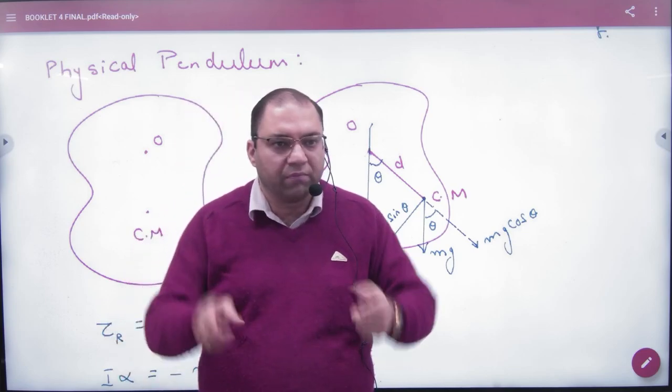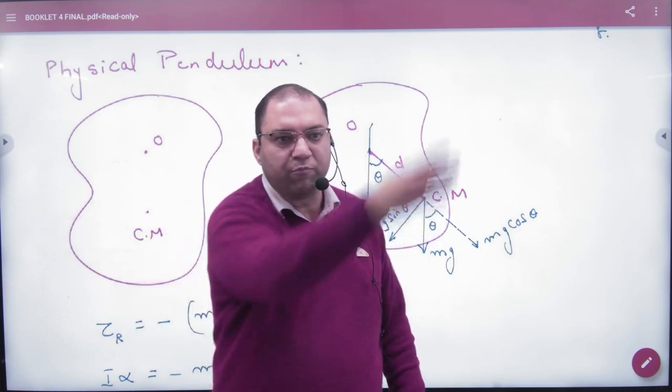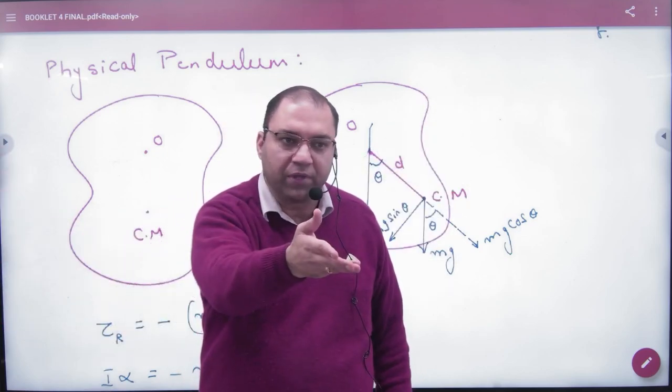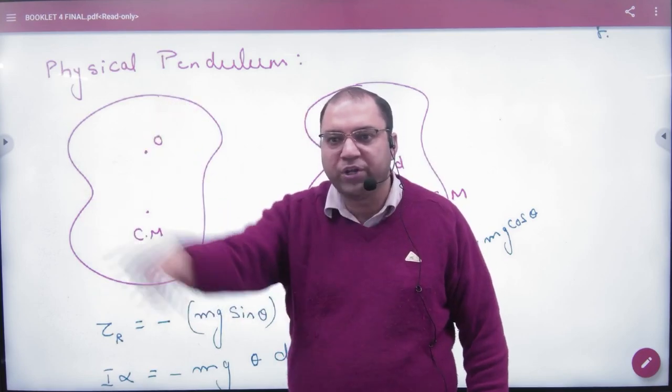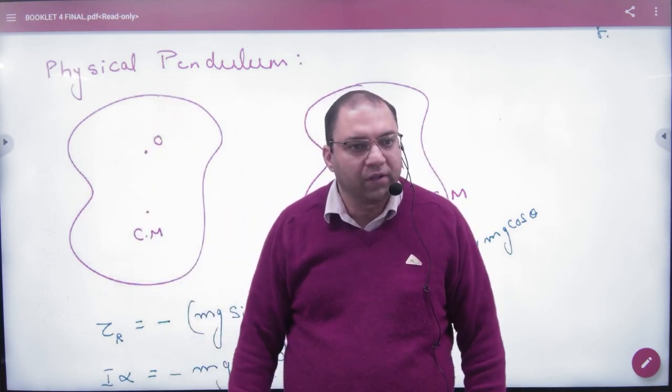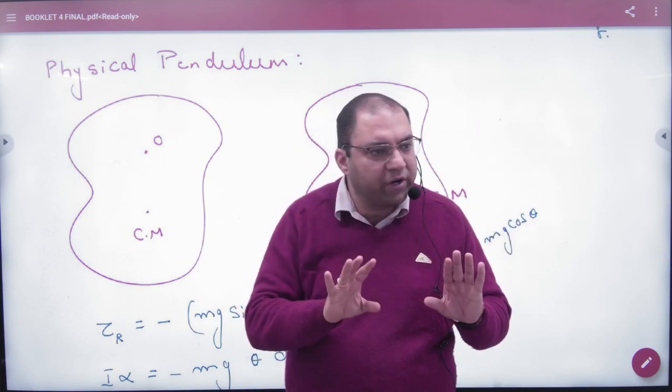Like a ring, take a big ring on the heel. Physical pendulum. Take a rod. Physical pendulum is nothing. If any body is going to and fro, then it's a physical pendulum.